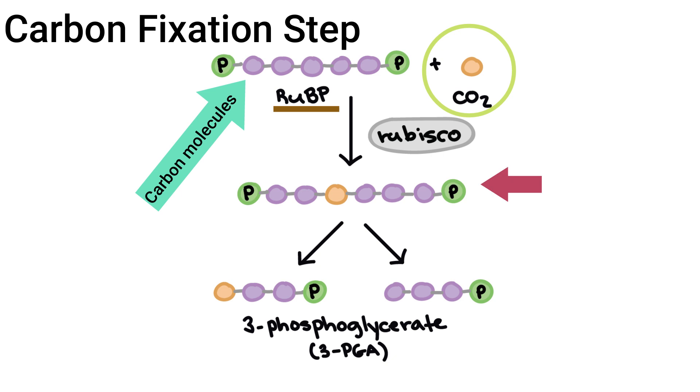This molecule quickly splits into two molecules of 3-PGA because the long molecule isn't stable enough to exist for a long period of time. One 3-PGA molecule thus has three carbons in its structure.